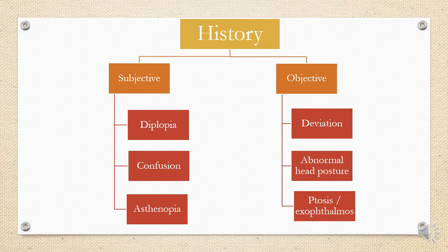Starting with investigation, you always begin with a detailed history. You ask about subjective symptoms: diplopia, confusion, and asthenopia. For diplopia, you ask about the onset, whether it is constant or intermittent, at which distance it occurs, and whether the amount of diplopia differs in different directions.